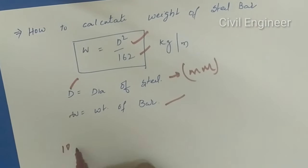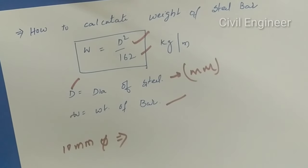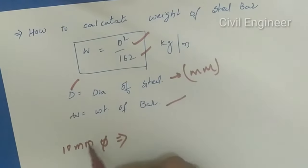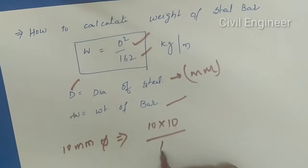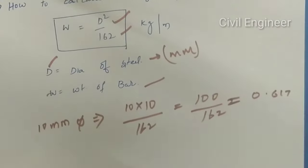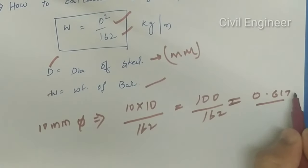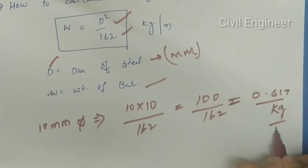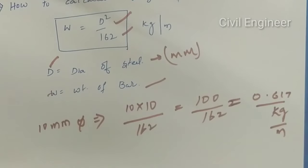For example, if we calculate the unit weight of 10mm diameter steel, we use 10 squared divided by 162, which equals 100 divided by 162, giving us 0.617 kilograms per meter. So in a one-meter bar, it is 0.617 kg.